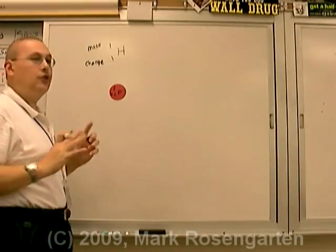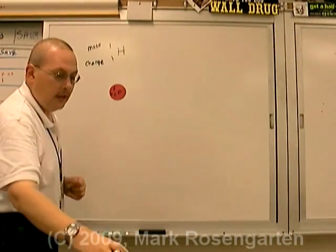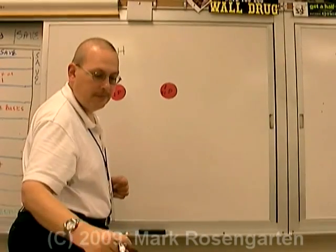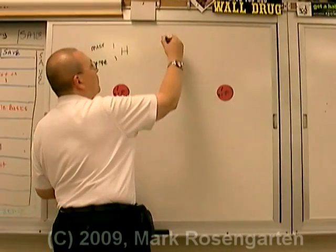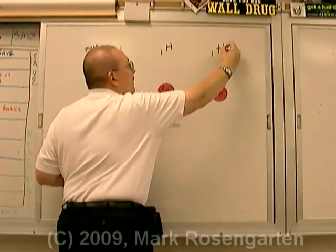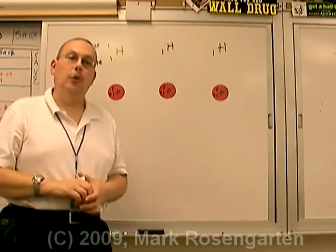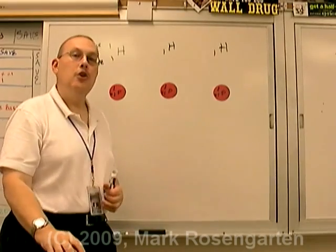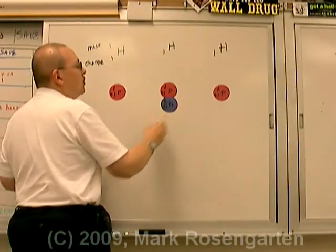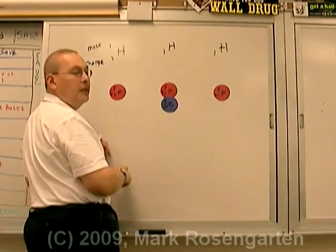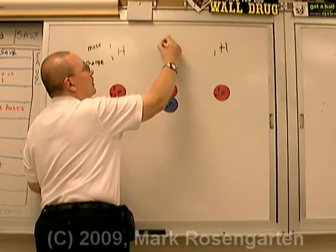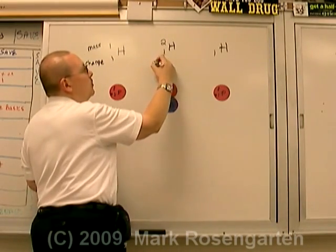There are two other forms of hydrogen, each again made of only one proton. The difference is each one contains a different number of neutrons. This form of hydrogen, which contains one neutron, has a combined mass of two atomic mass units. This is referred to as deuterium.